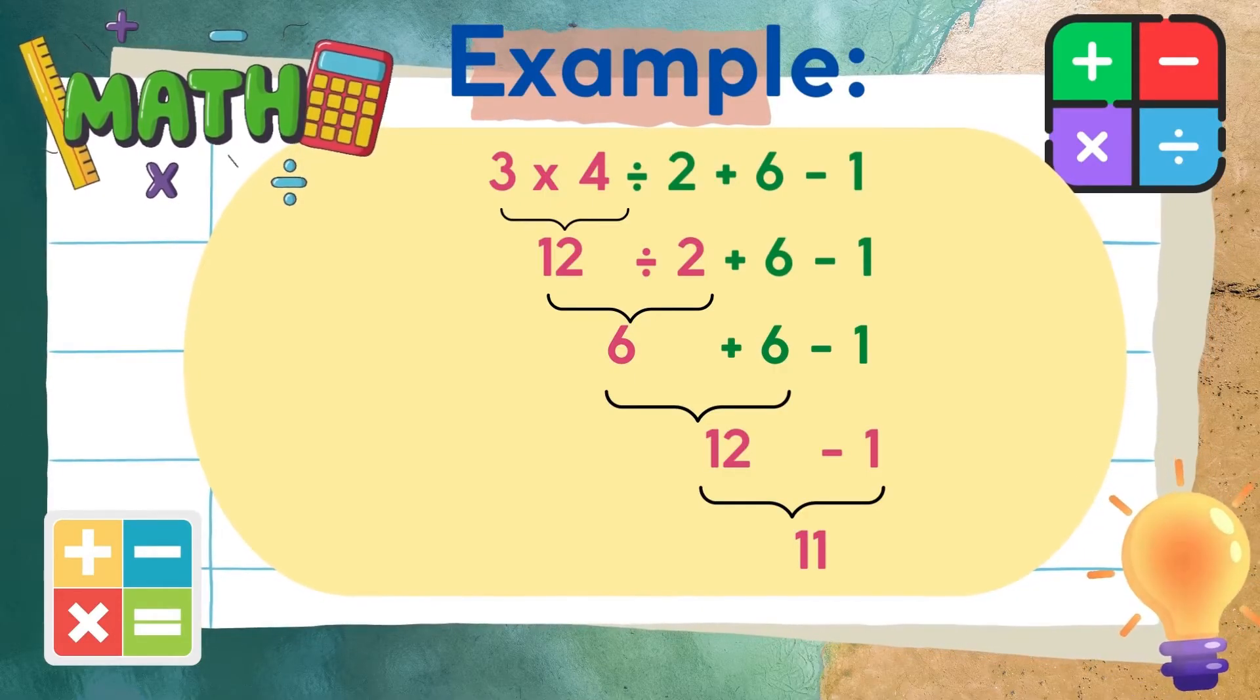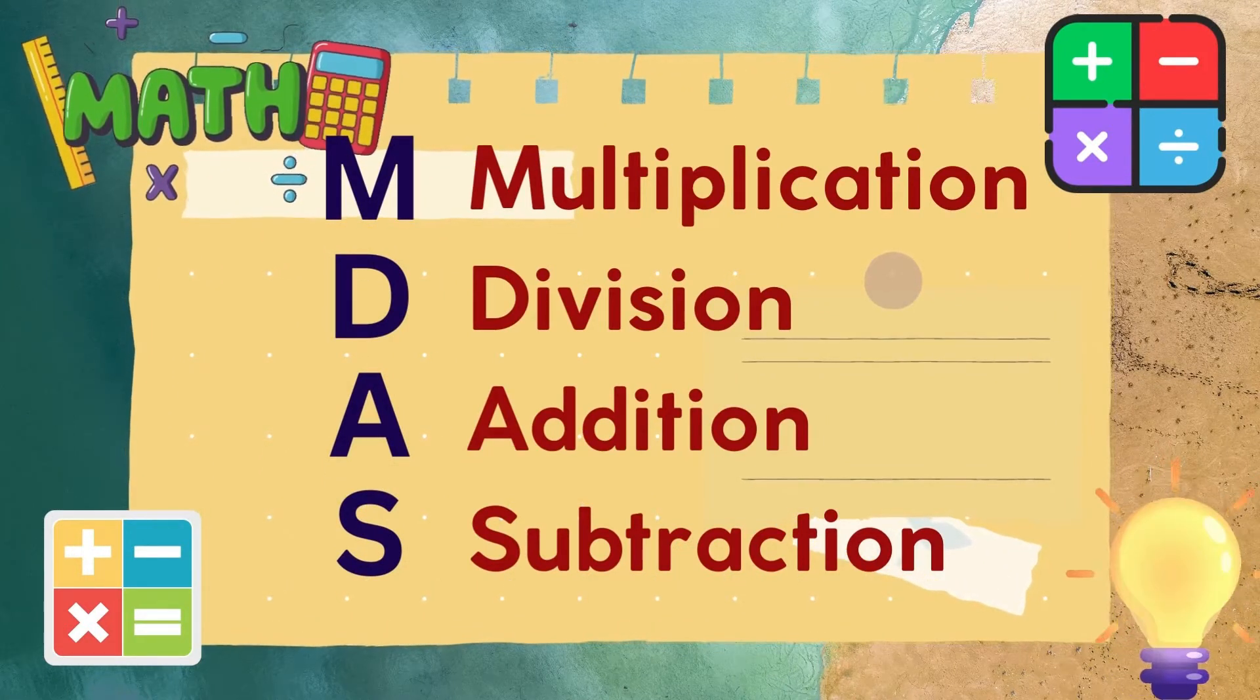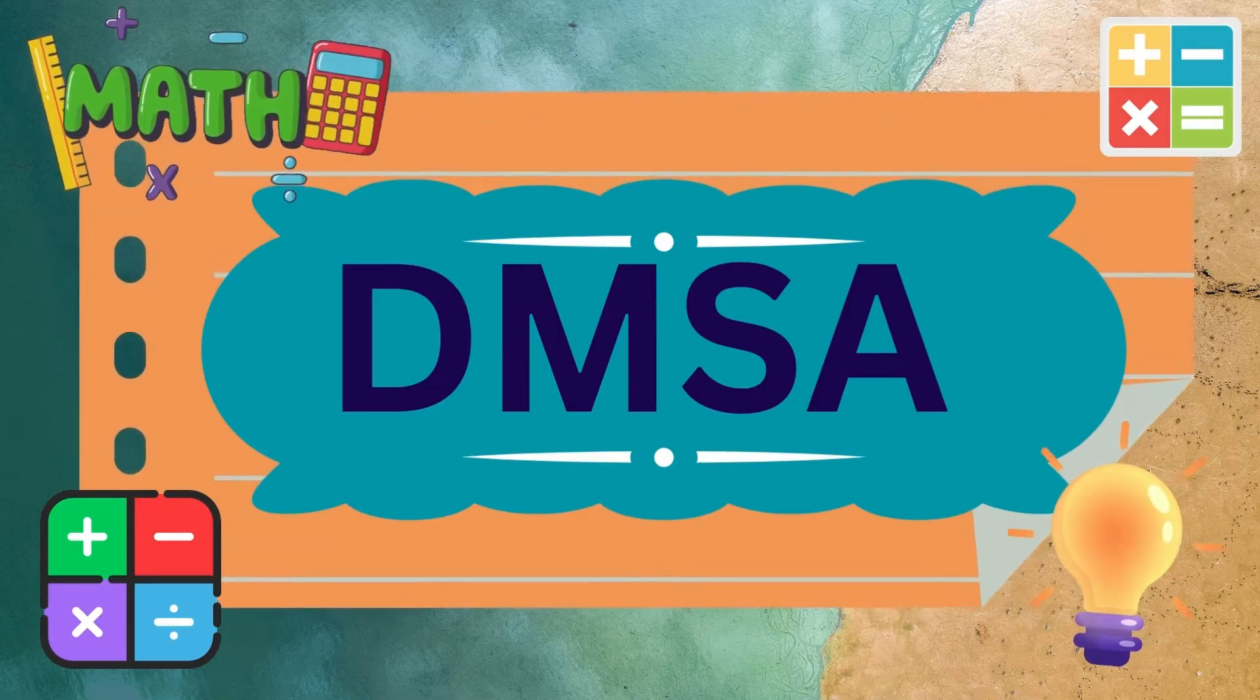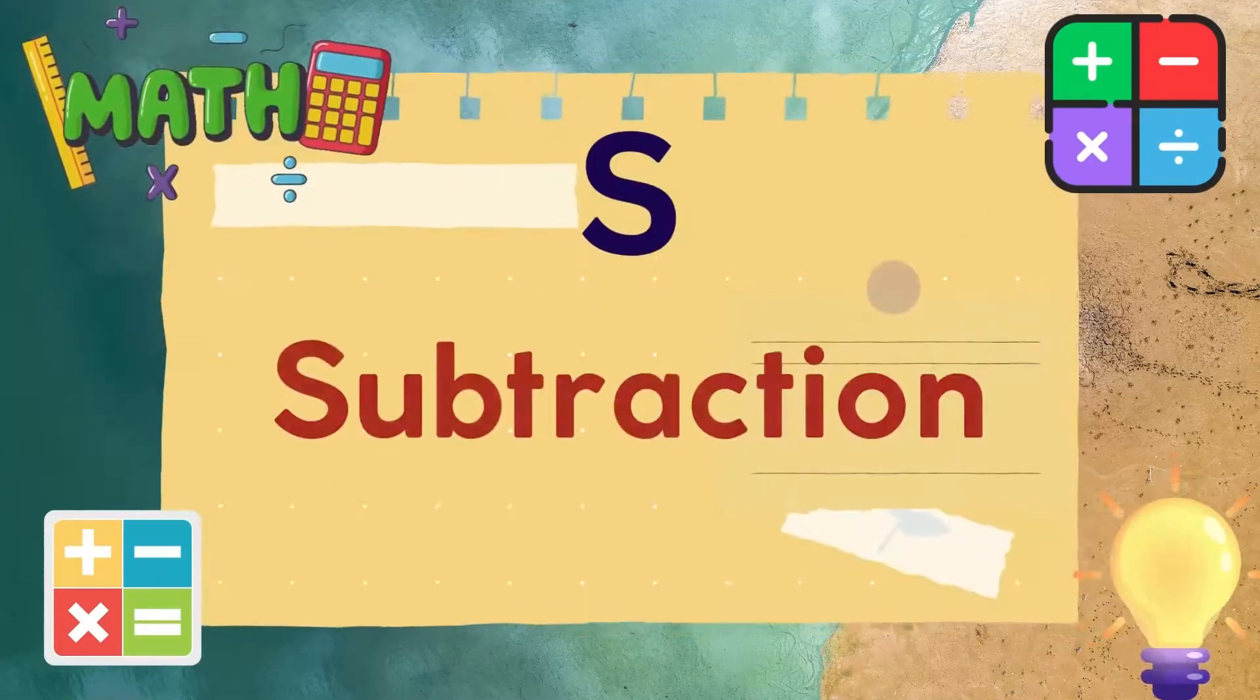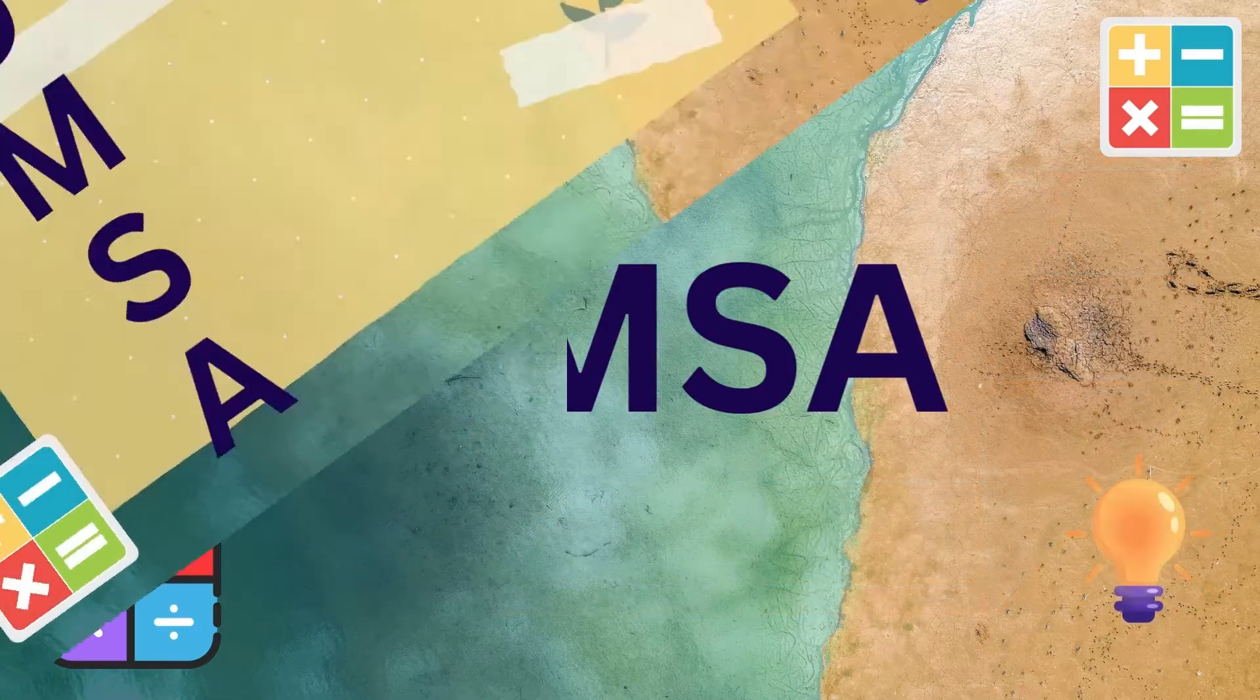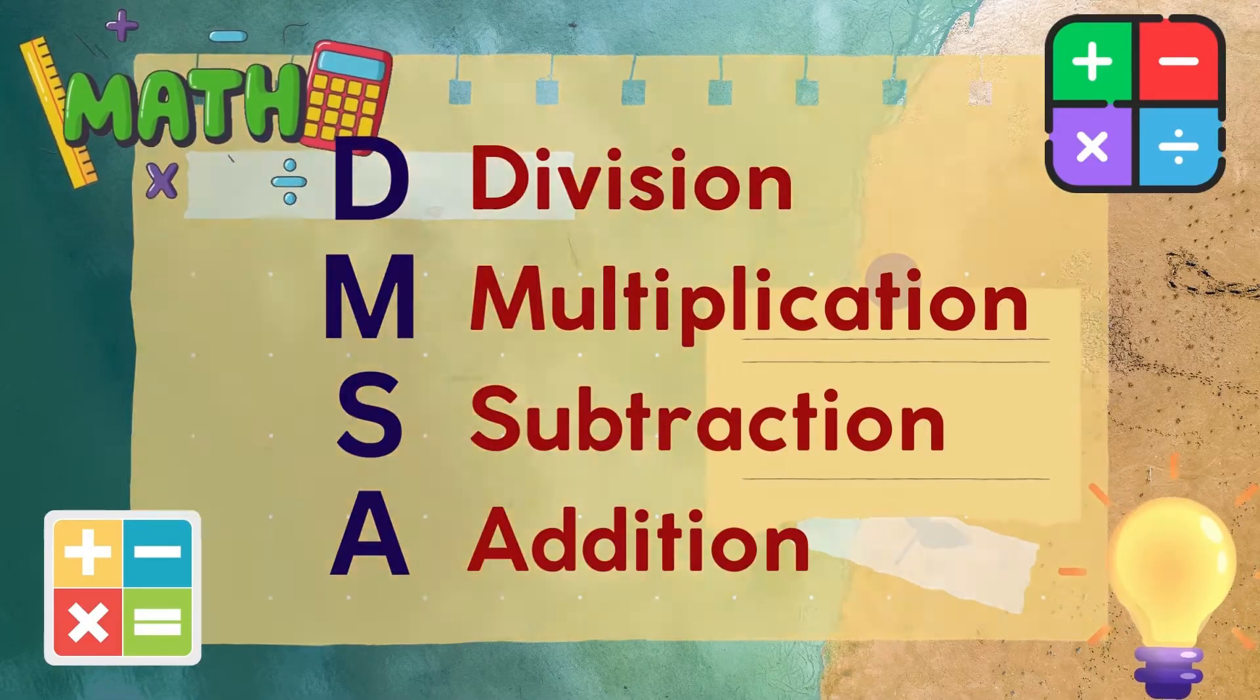This is an example in which the order of operations follows the MDAS rule. Just to make it clear, this rule may also be in order of DMSA: division, multiplication, subtraction, and addition. We should perform first all those involving the operations of division and multiplication before performing subtraction and addition.